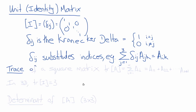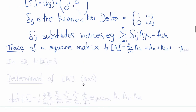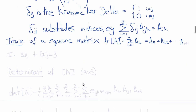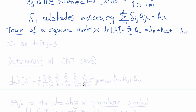Another property of a square matrix is the sum of the diagonal components, known as the trace of the matrix. The trace of A is the sum from I equals 1 to N of AII — the diagonal components — so A11 plus A22 through to ANN. For a 3 by 3 identity matrix, the trace of I equals 3, since 1 plus 1 plus 1 equals 3.